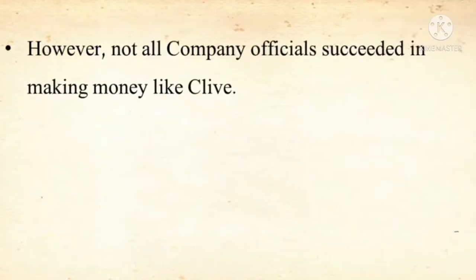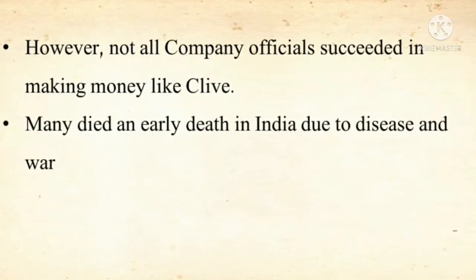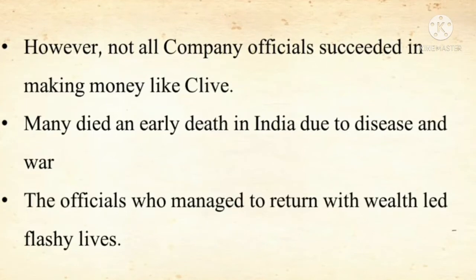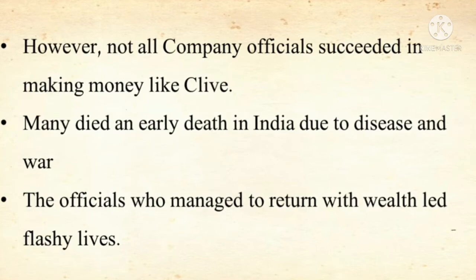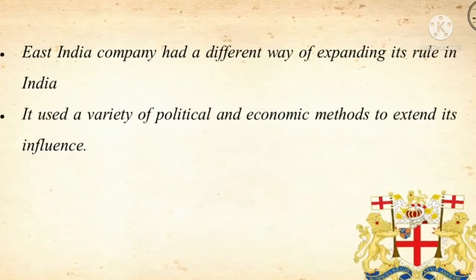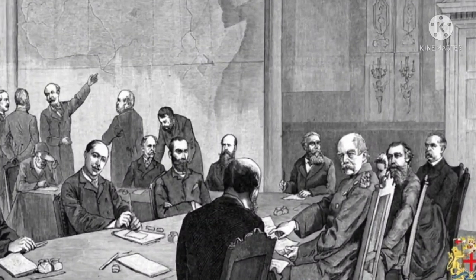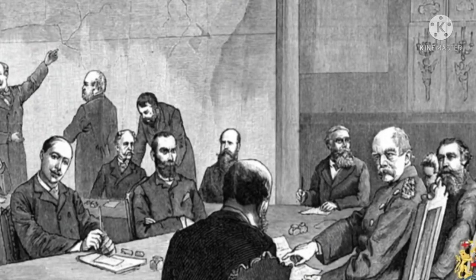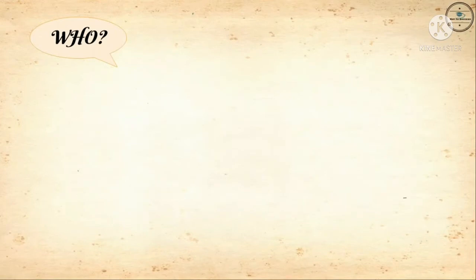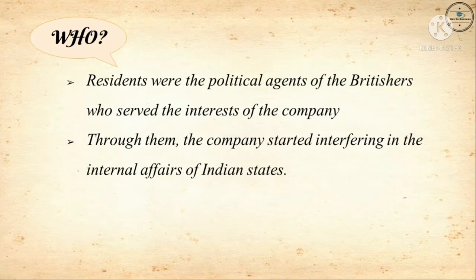However, not all company officials succeeded in making money like Clive. Many died an early death in India due to disease and war. Now, the British East India Company had a different way of expanding its rule in India — it used a variety of political and economic methods to extend its influence. After the Battle of Buxar, the company appointed Residents in Indian states. The Residents were the political agents of the British who served the interests of the company. Through them, the company started interfering in the internal affairs of the Indian states.